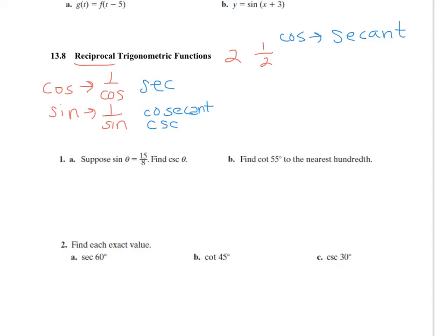And the tangent — the reciprocal of tangent is 1 over tangent, which we call the cotangent. So cotangent and tangent are easy to keep together, but cosine you would think would go with cosecant. However, cosine goes with secant, and sine goes with cosecant, CSC.